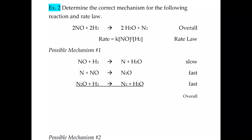Today we're on page 9 of the AP Chemistry Chapter 12 packet, and we're going to continue to talk about mechanisms. Now we're going to relate mechanisms to rate laws — you can actually find the rate law of a reaction from the mechanism. We're going to work a little backwards here: given the rate law, we'll ask which mechanism is correct, either number 1 or number 2 on this page. So we're going to start with mechanism number 1.